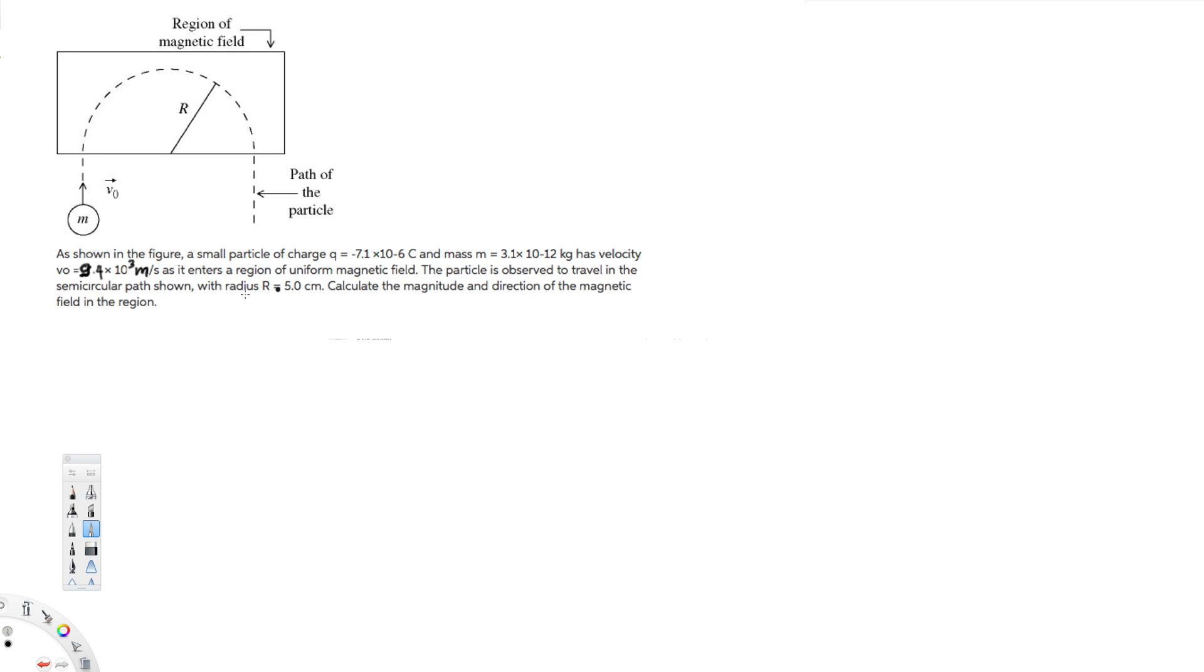...equal to this value has this velocity as it enters a region of uniform magnetic field. The particle travels in a semicircular path with radius R = 5 centimeters. Calculate the magnitude and direction of the magnetic field in the region.